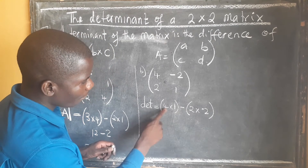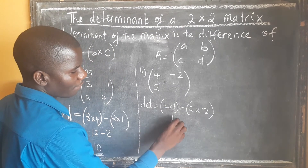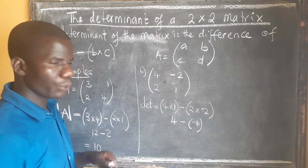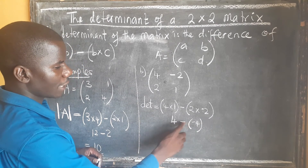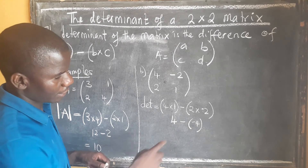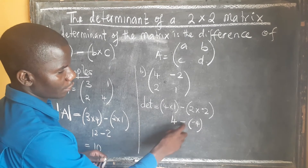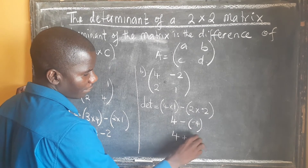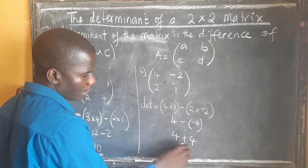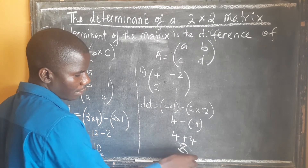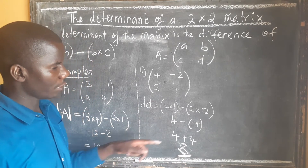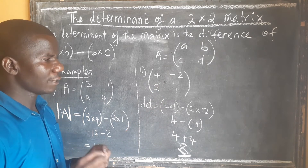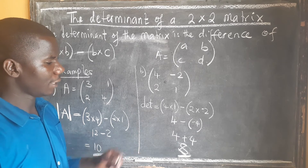When we multiply 4 by 1 we get 4, and then we have two signs separated by brackets. Multiplying 2 by negative 2 gives us negative 4, and the two negatives will give us a positive. So the answer adds up to 8 — 8 is the determinant of this matrix.